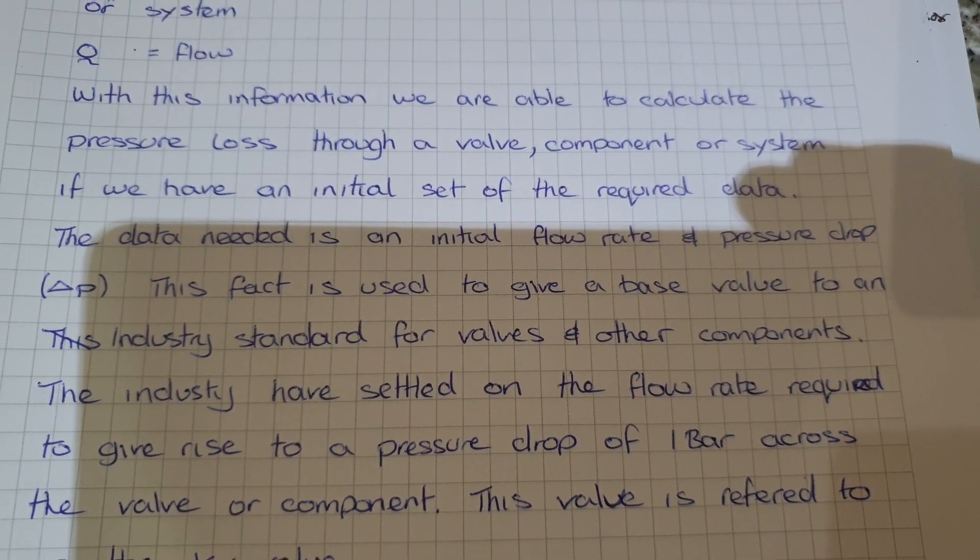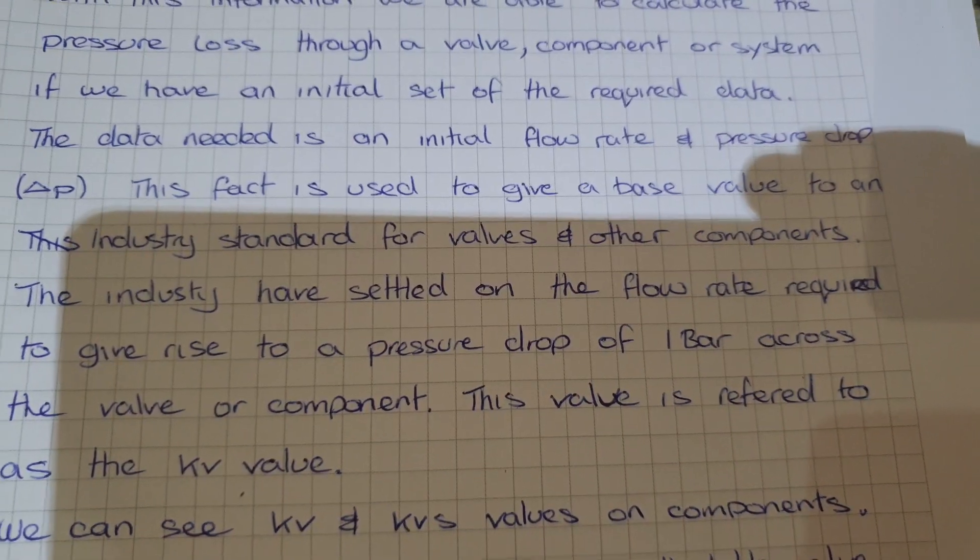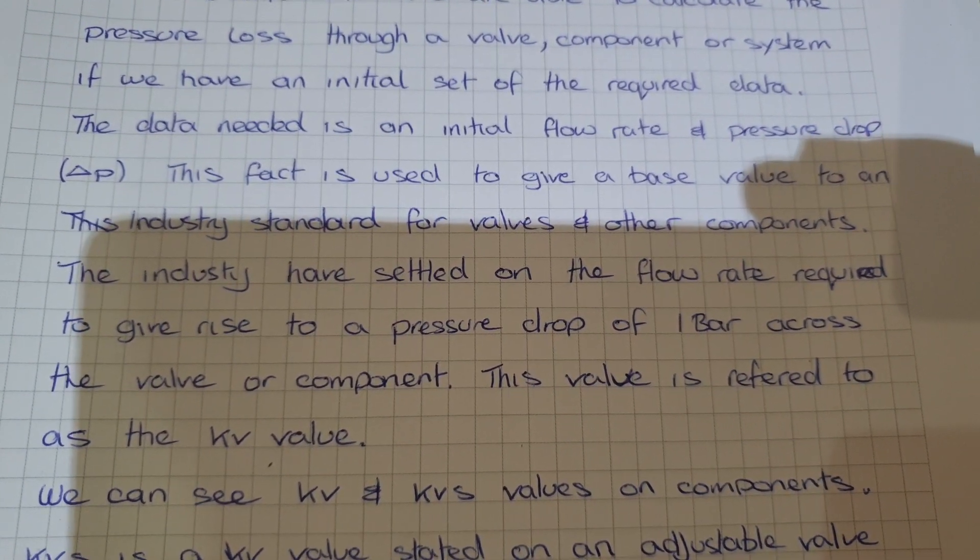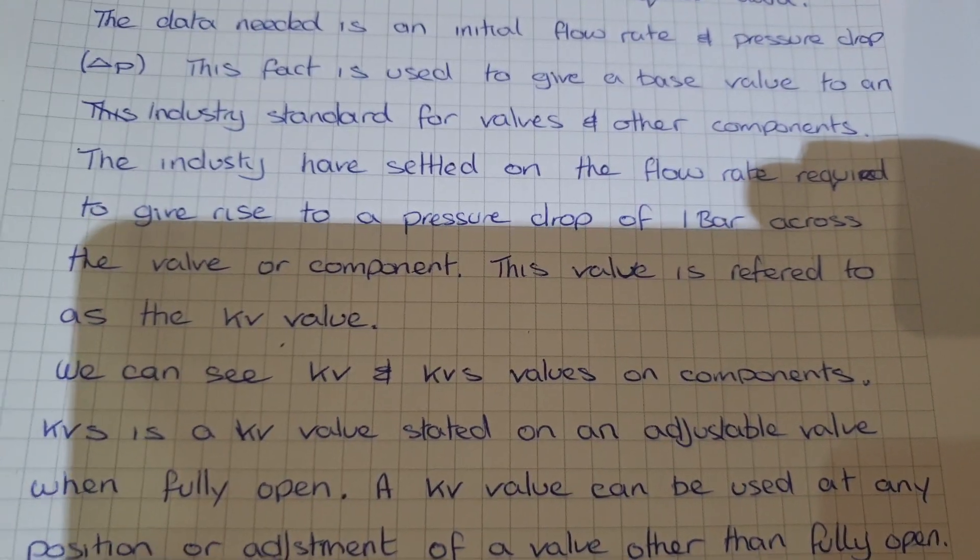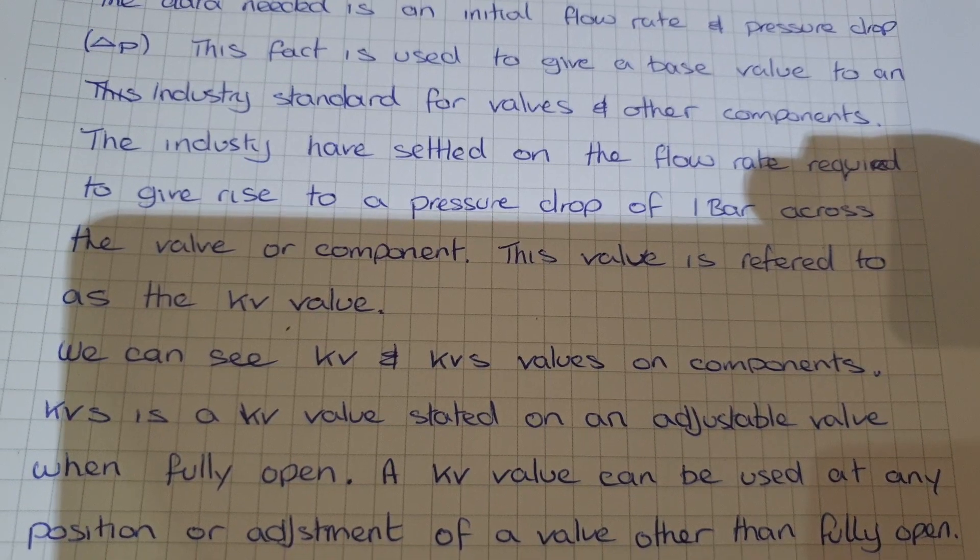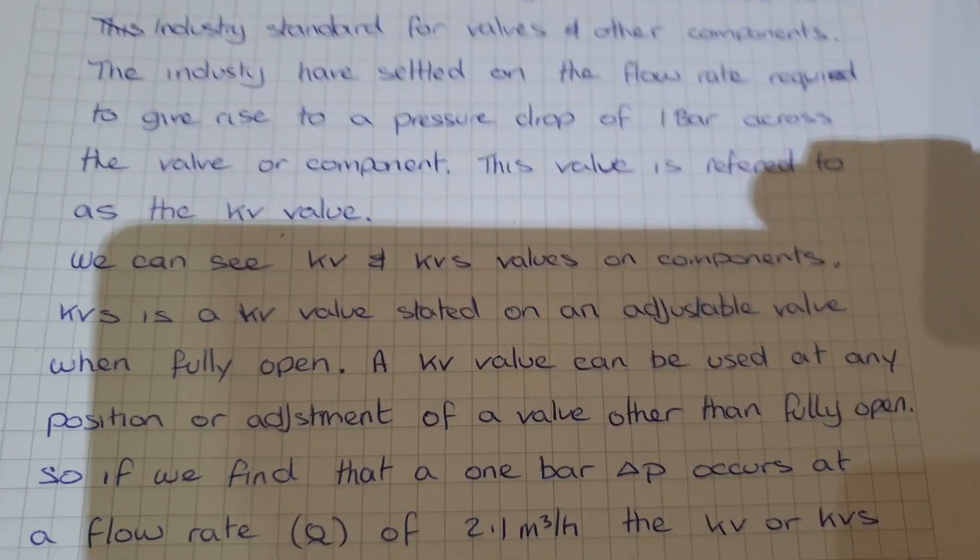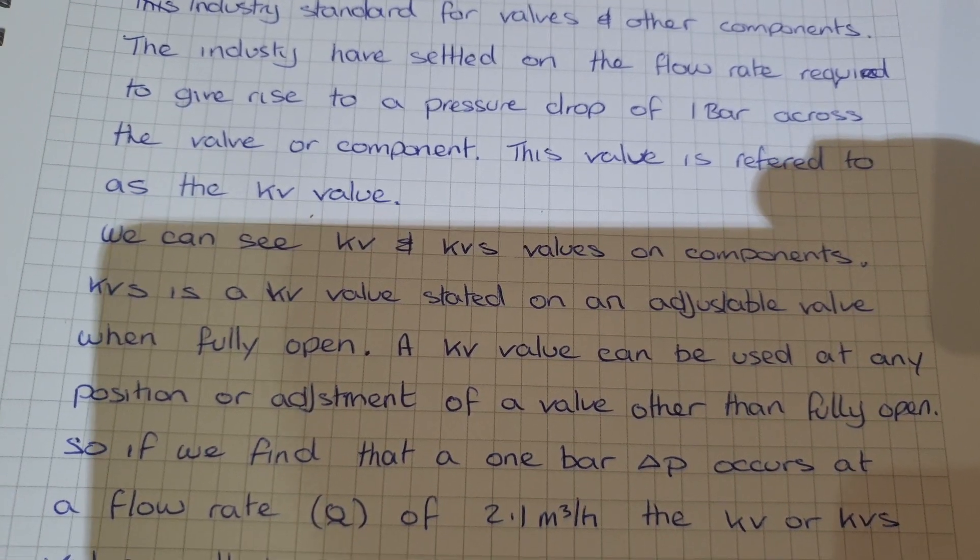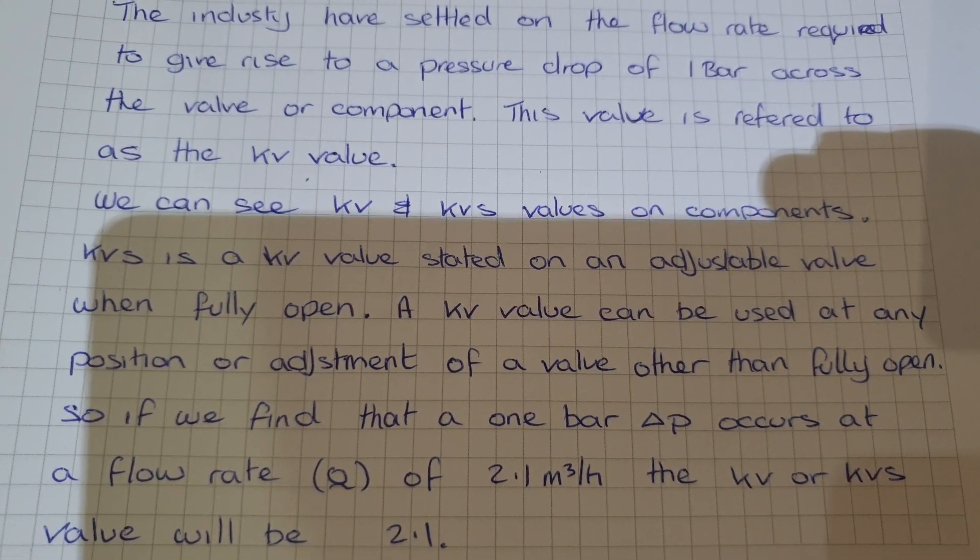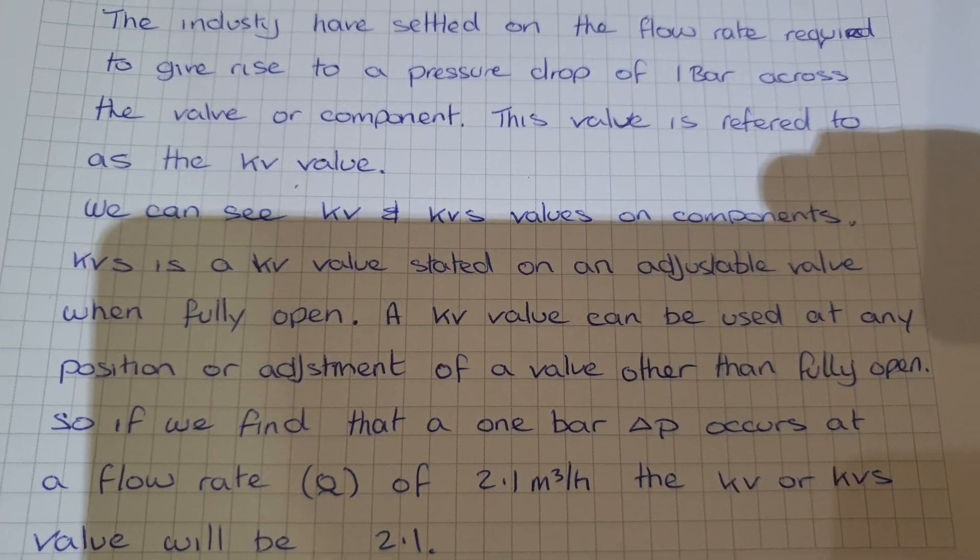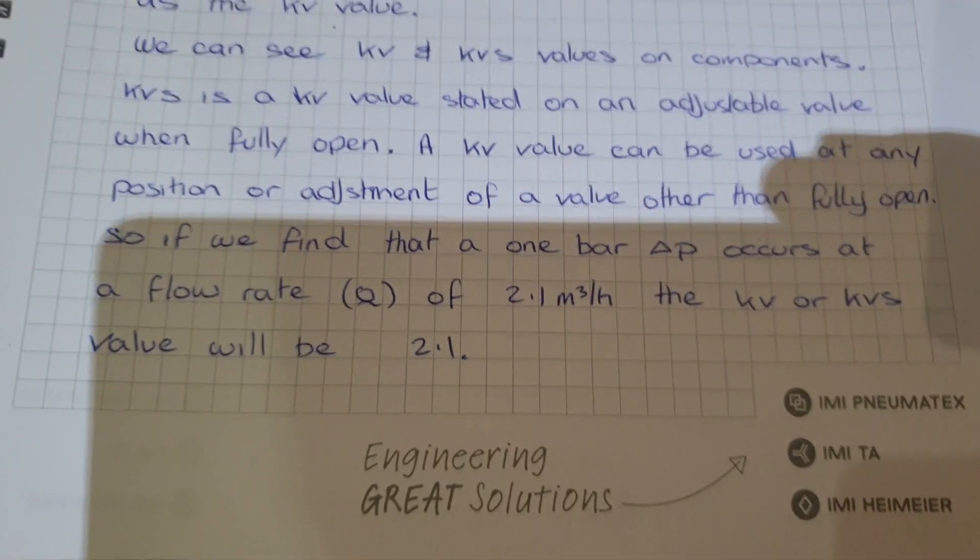The data needed is initial flow rate and pressure drop (delta P). This fact is used to give a base value to an industry standard of valves and other components. The industry have settled on the flow rate required to give rise to a pressure drop of one bar across the valve or component. This value is referred to as a KV value.